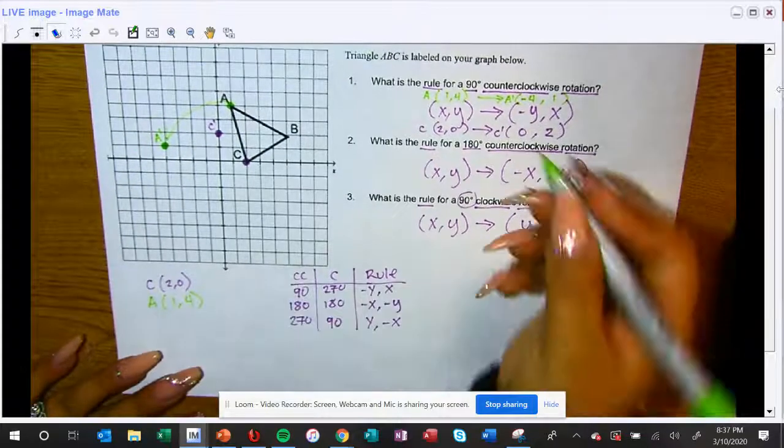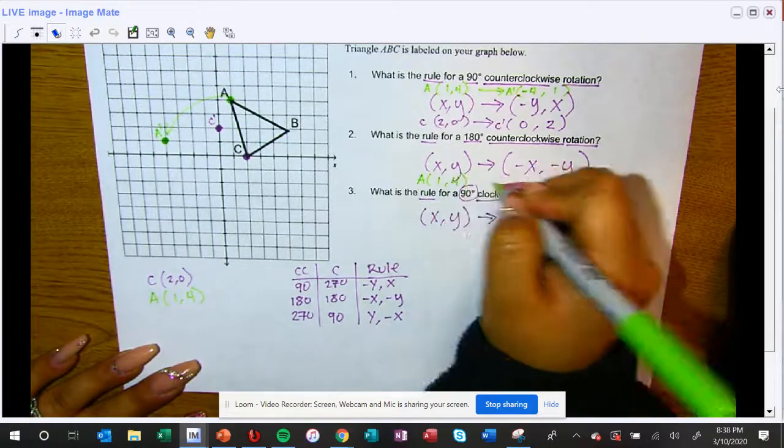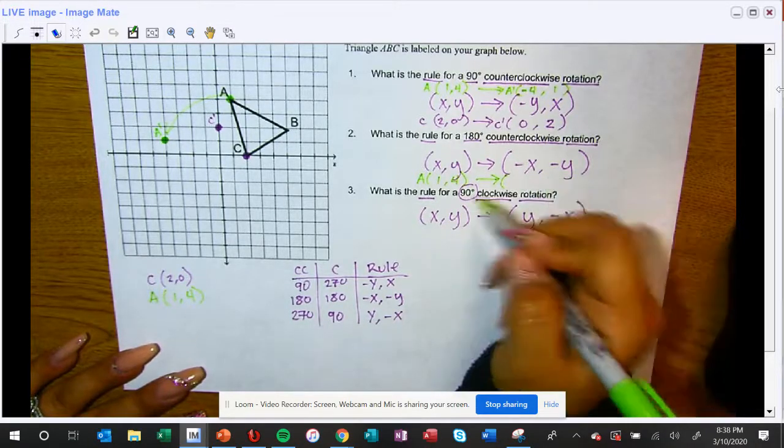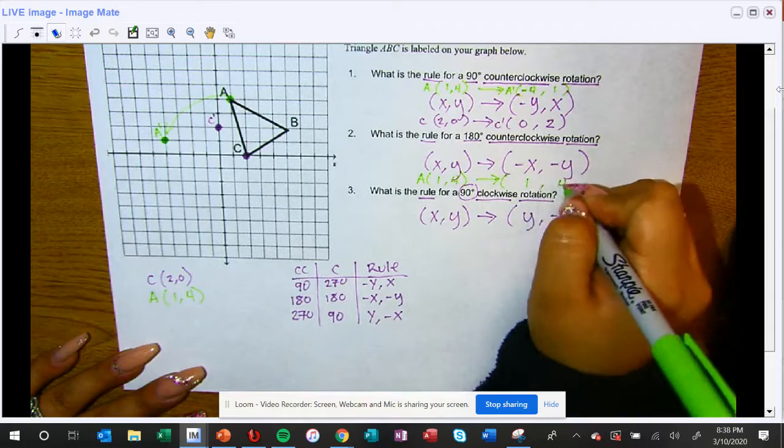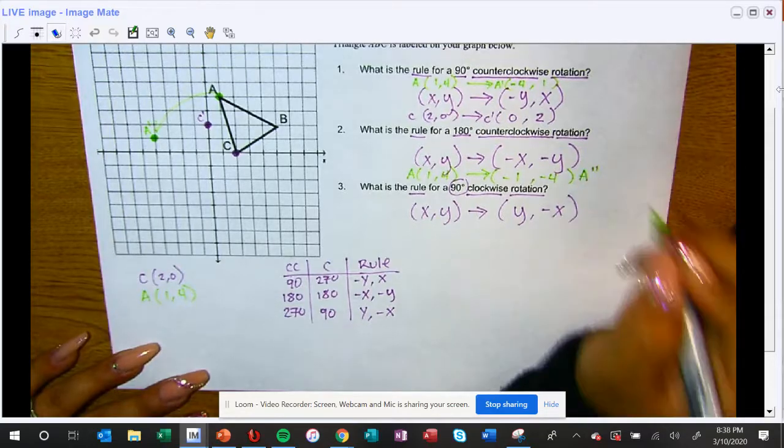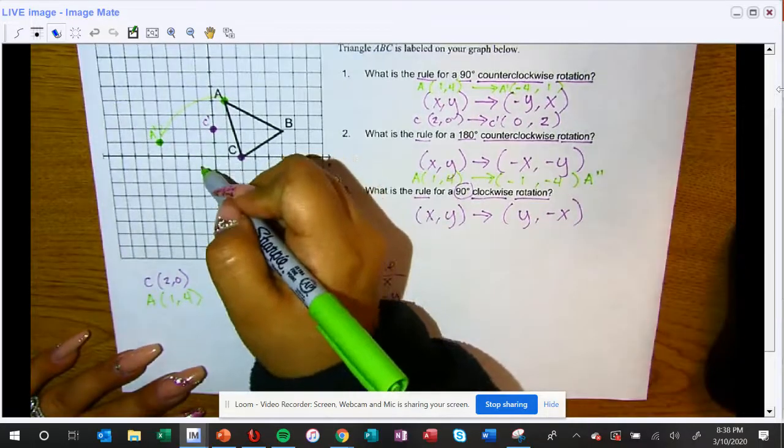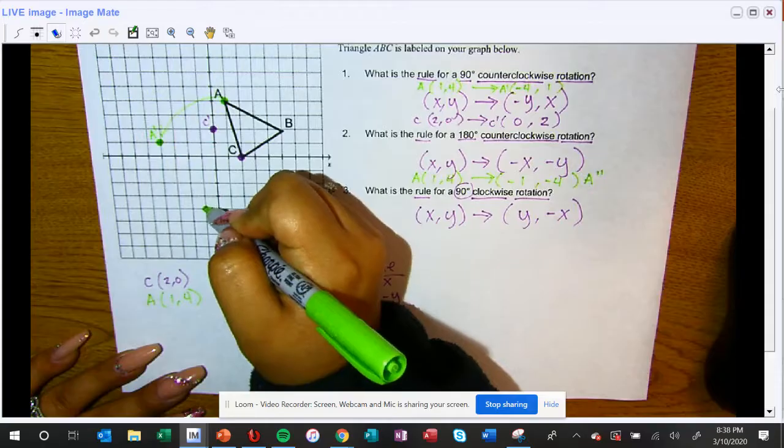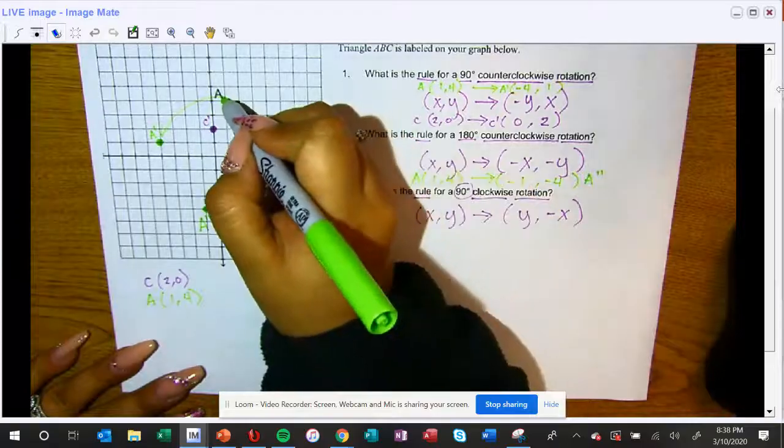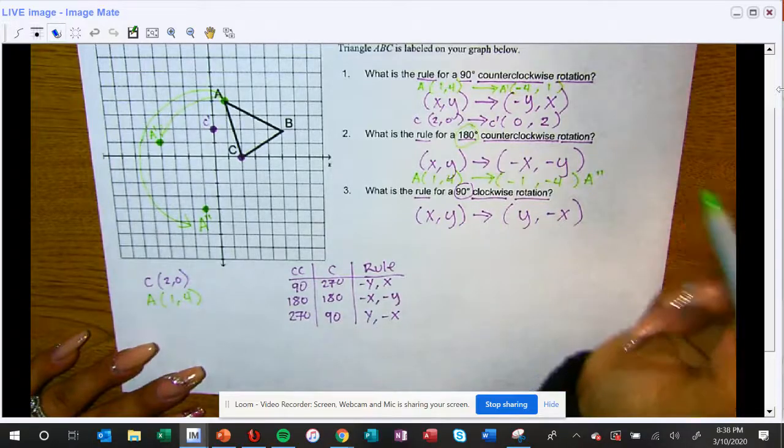I'm going to use the same A point here. A is one comma four. Notice how X and Y don't switch spots, they stay in the same spot. The only difference is that now I'm going to put a negative in front of each, so I'm going to label this A prime prime because this is my second time that I've turned it. So negative one comma negative four: one, two, three, four. A double prime. This is when I've turned it once and then twice. So that is what a 180 degree rotation looks like.